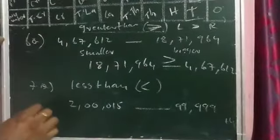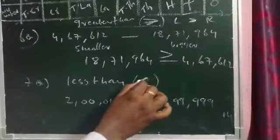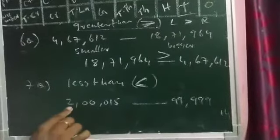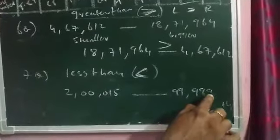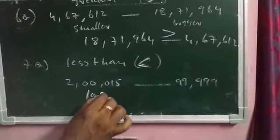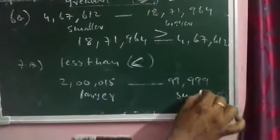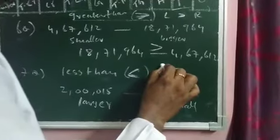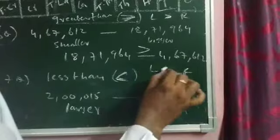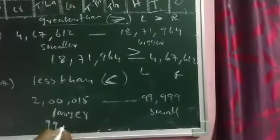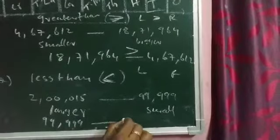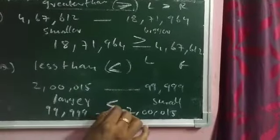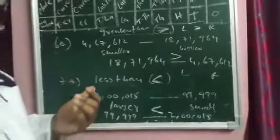Question seven is the same model but you use the less than symbol. Which number is bigger? Two lakhs fifteen, or ninety-nine thousand nine hundred ninety-nine? Two lakhs fifteen is the larger number and ninety-nine thousand nine hundred ninety-nine is the smaller number. For the less than symbol, the smaller number goes on the left side and the bigger number goes on the right side. So: 99,999 < 2,00,015. Try the remaining questions the same way.